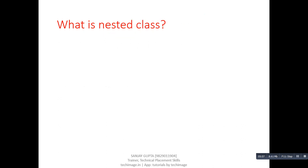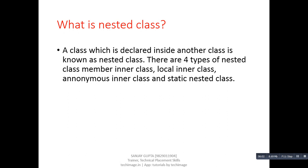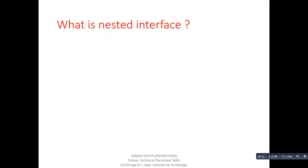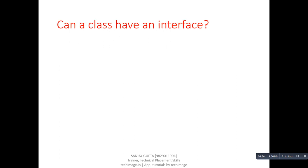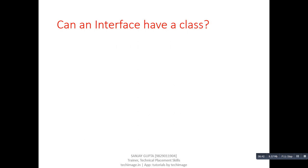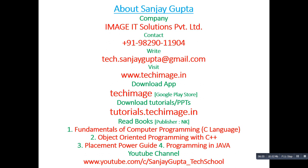Next question: what is nested class? Next question: what is nested interface? Answer: Any interface that is declared inside an interface or class is known as a nested interface. It is static by default. Next question: can a class have an interface? Answer: Yes, it is known as a nested interface. Next question: can an interface have a class? Answer: Yes, they are static implicitly. Thank you for watching these questions and answers. Hope these will be beneficial for your placement.